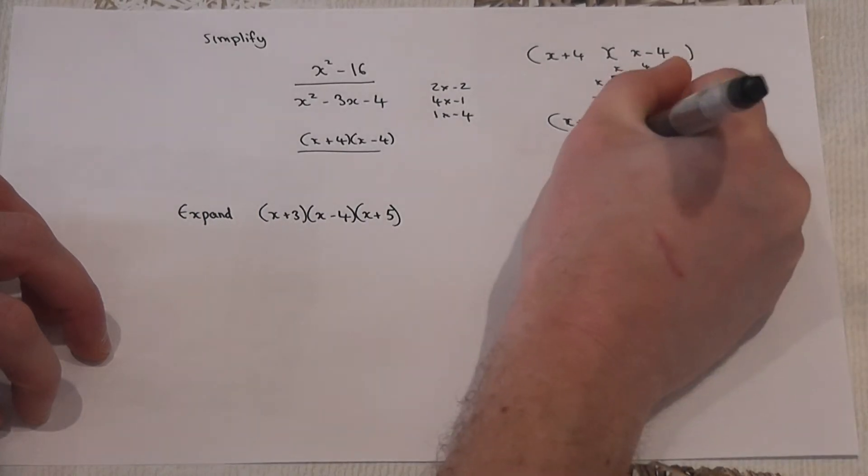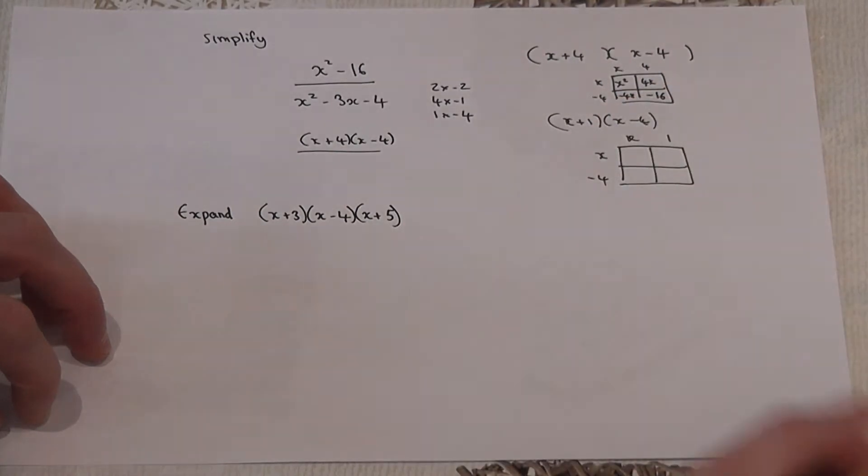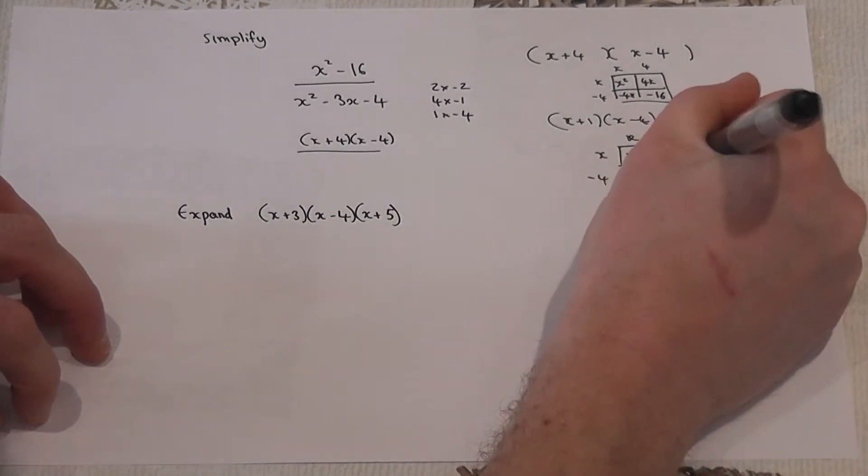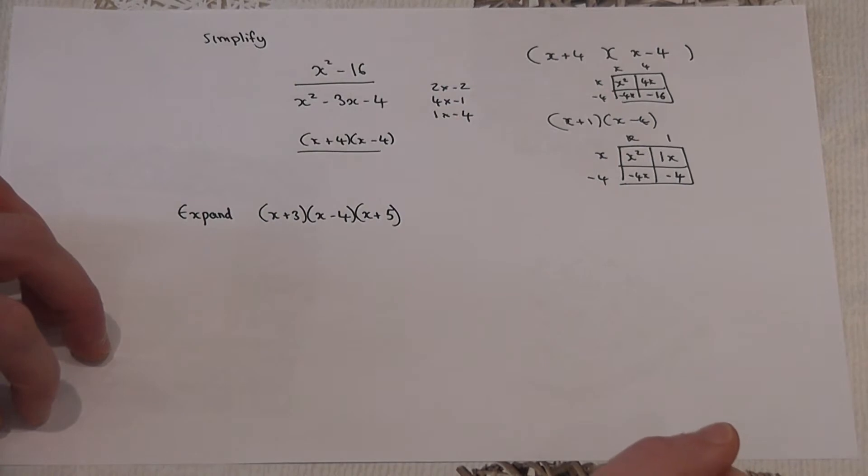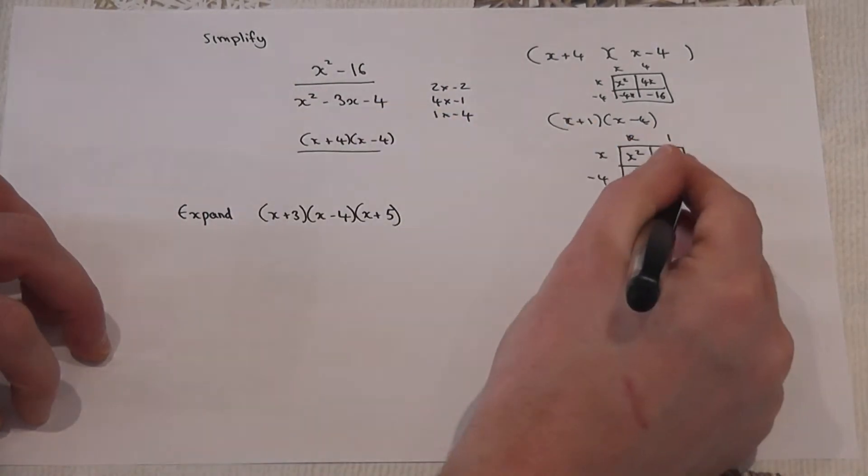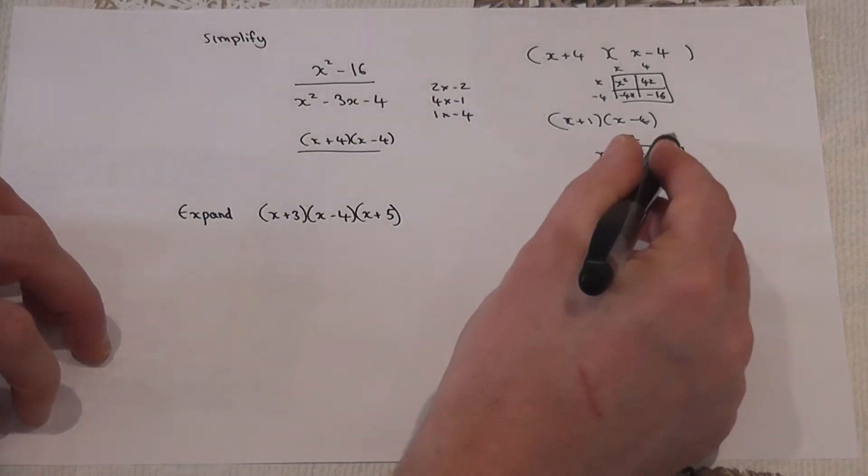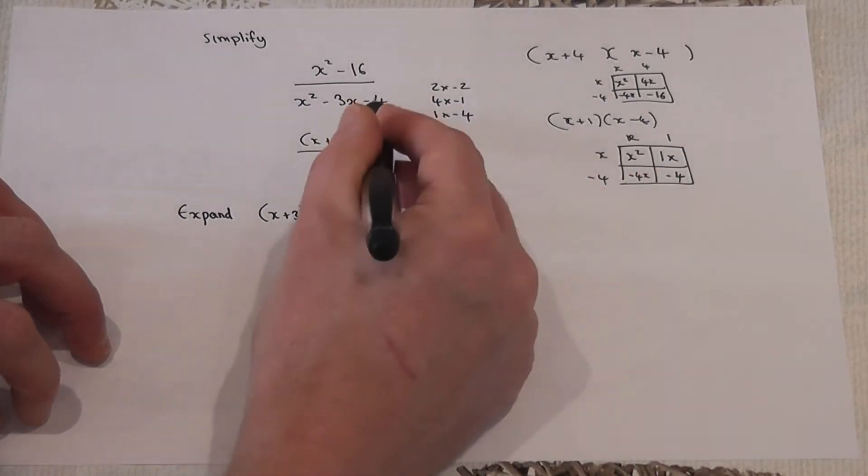x times 1, x times minus 4. I get an x squared, I get a 1x, I get a minus 4x, and 1 times minus 4 is minus 4. And x squared is correct. 1x take away 4x is minus 3x, and 1 times minus 4 is indeed minus 4.